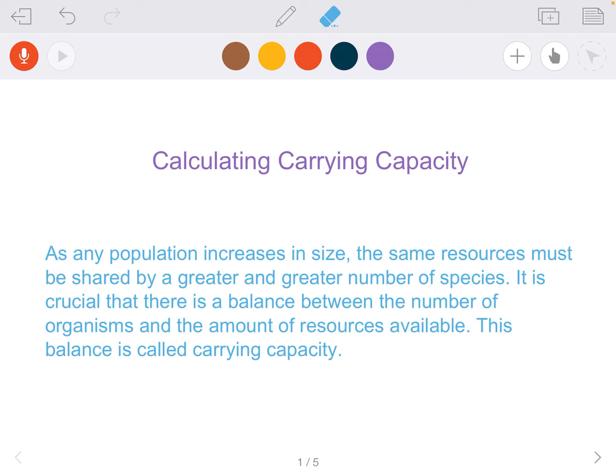We're going to be discussing carrying capacity and how to calculate it. As any population increases in size, the same resources must be shared by a greater number of species. It is crucial that there is a balance between the number of organisms and the amount of resources available. This balance is called carrying capacity.